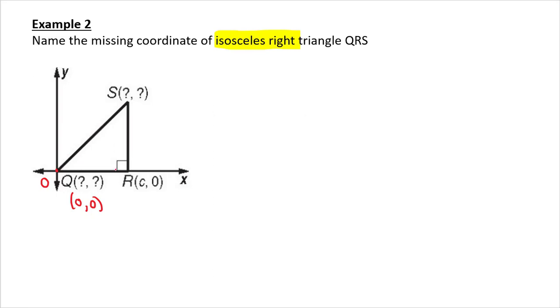Since this is an isosceles right triangle, we know this is c units long, because I went over c units to get there. Since it's an isosceles triangle, I know that that's c. So that is zero and c. No, it's not zero and c, because I'm not on the x-axis. I'm not on the y-axis. I went over c units and up c units, so it's c and c.